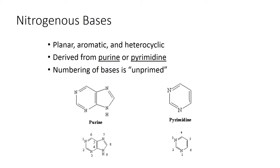The numbering of bases is important. In pyrimidine, this is the structure of purine, where a six-membered ring is fused with a five-membered ring. This is a purine and this is the numbering of the purine ring, and this is the pyrimidine numbering.